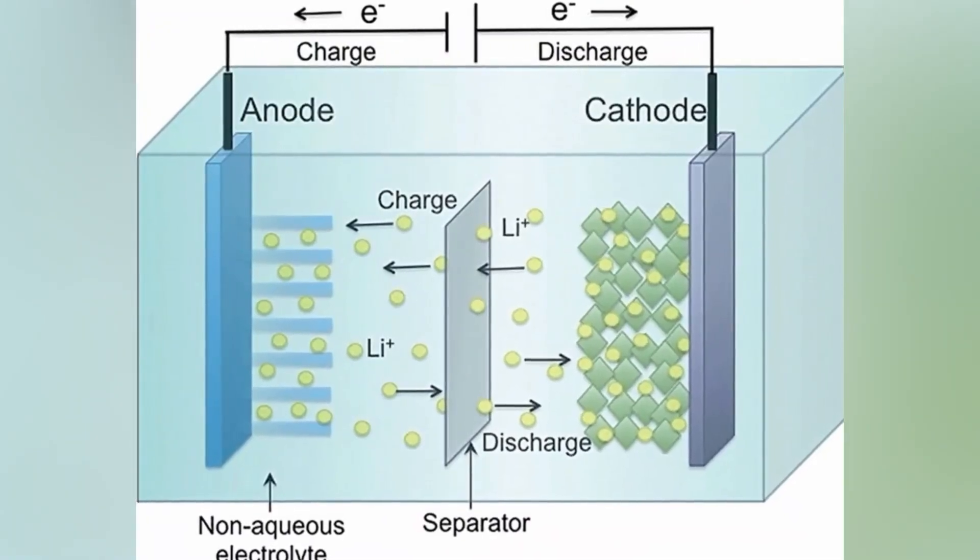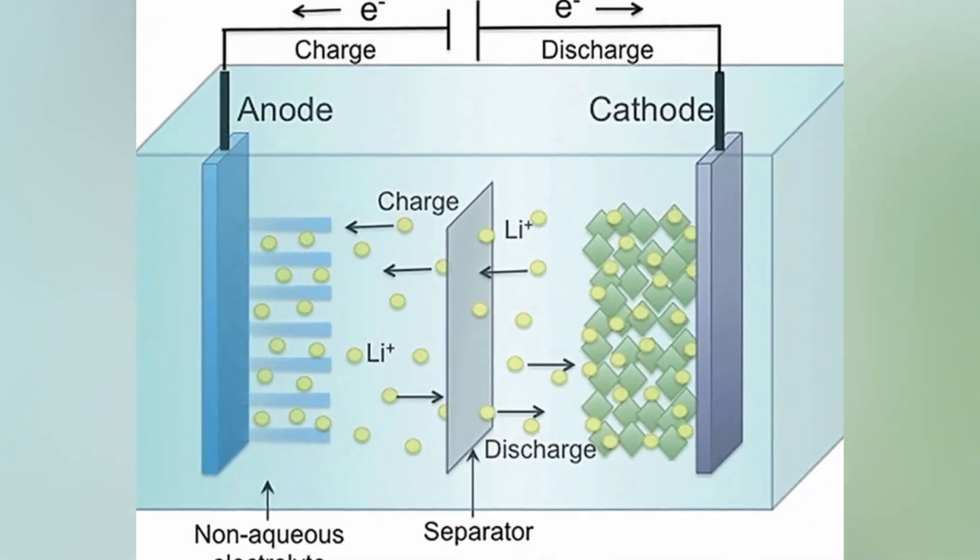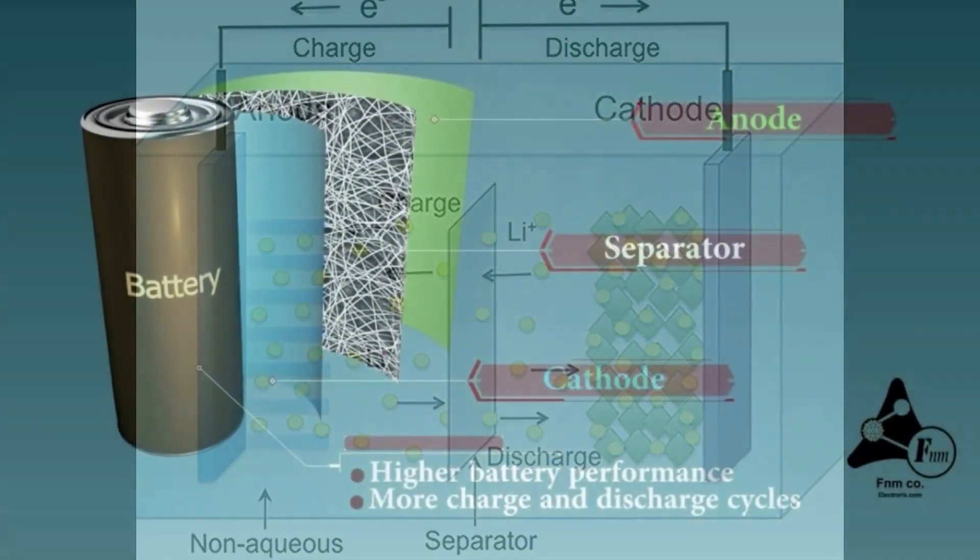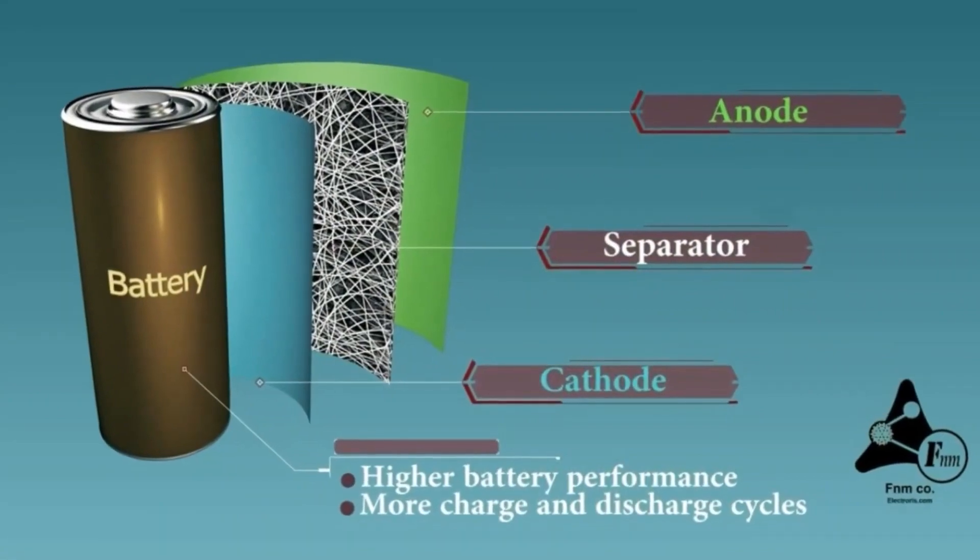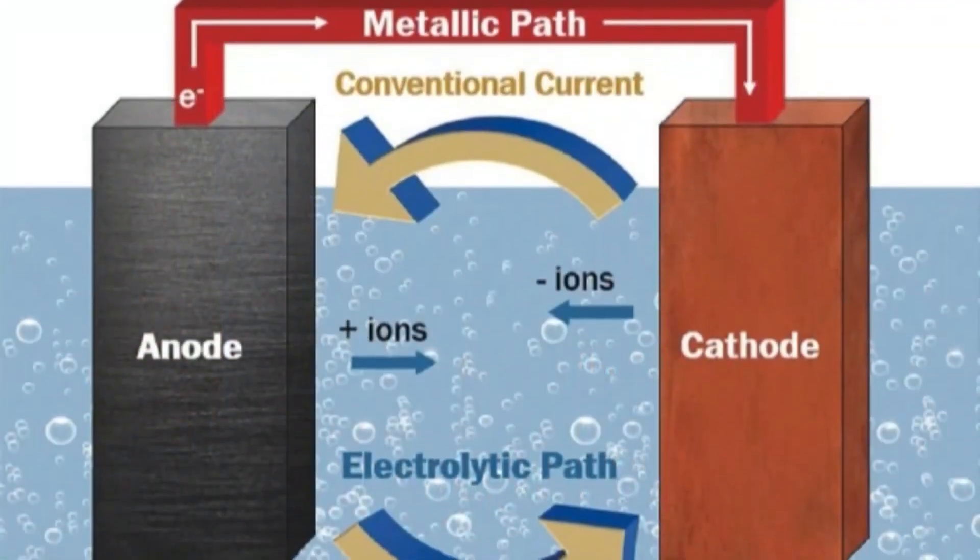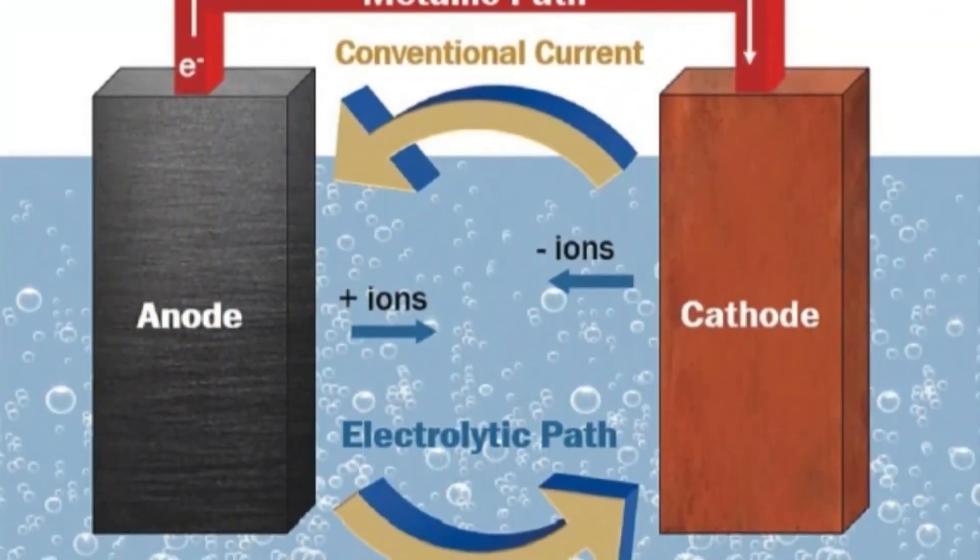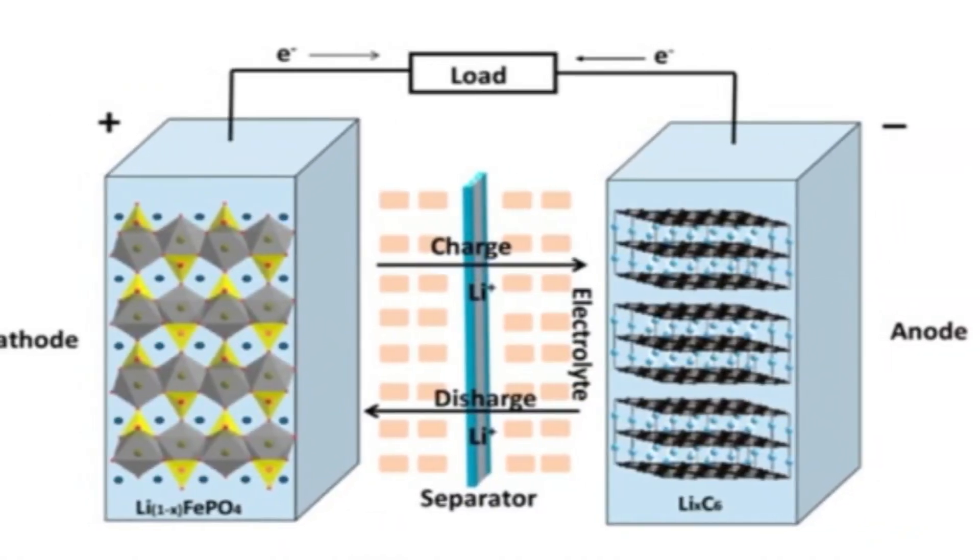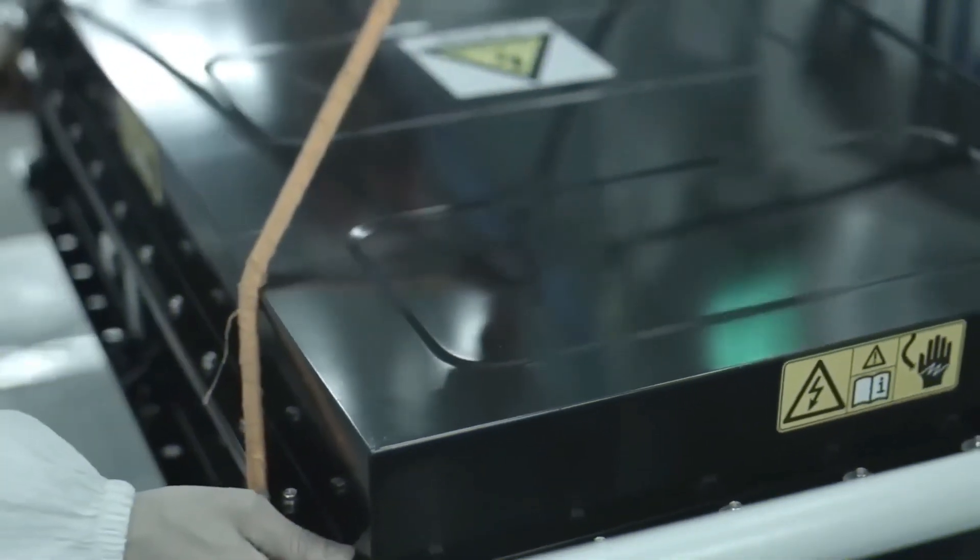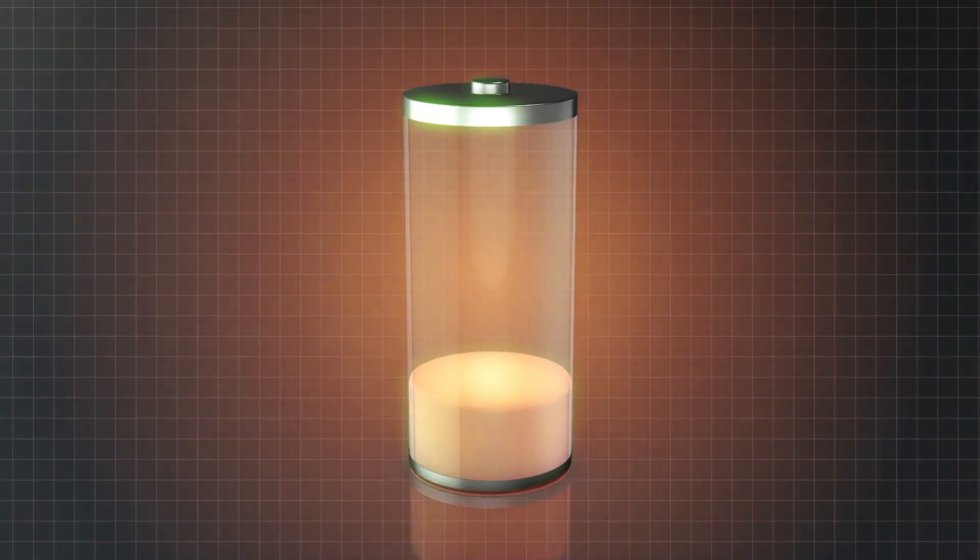The electrode at the battery's one end reacts with the electrolyte to produce power. Electrons are released as a result of this chemical process. A separate chemical reaction occurs between the electrode and the electrolyte at the battery's other end. This reaction requires more electrons before it could occur.